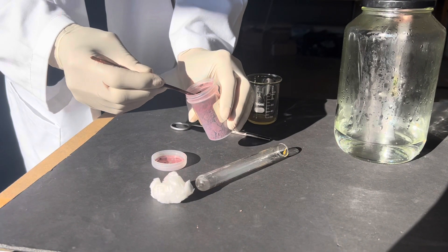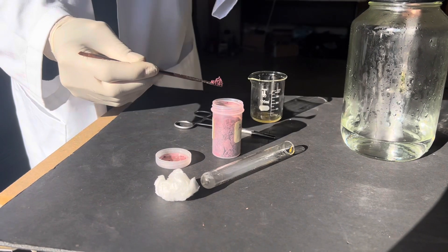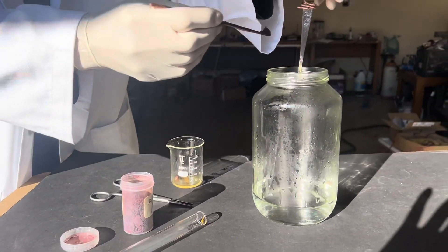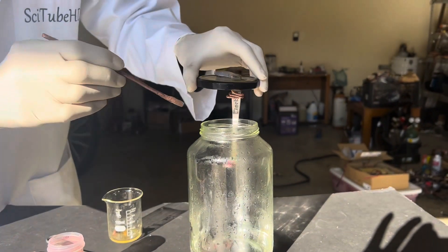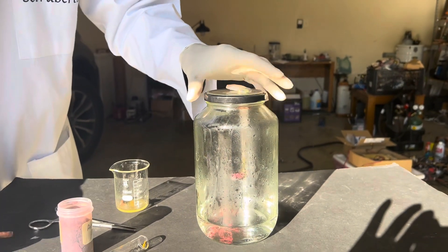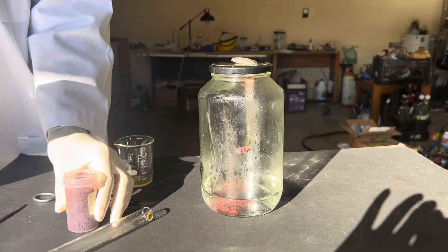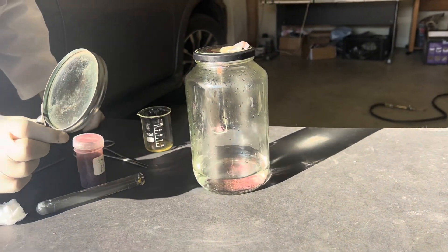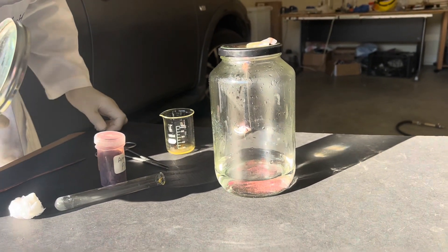Now let's try the same thing with the amorphous allotrope. Here it is. In order to get this to start burning we're going to have to heat it up using a magnifying glass.